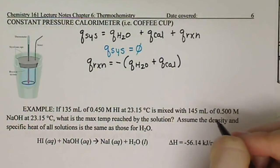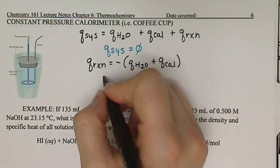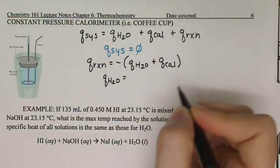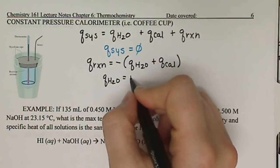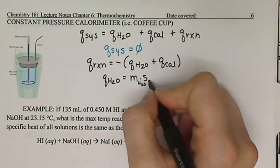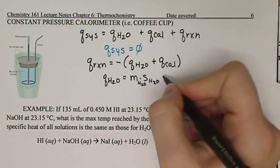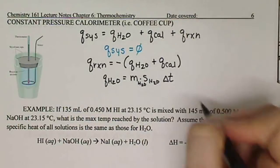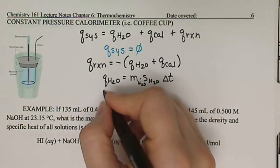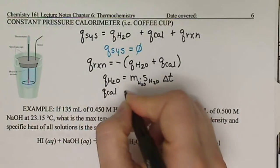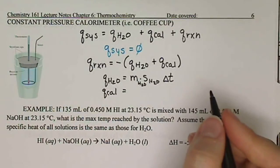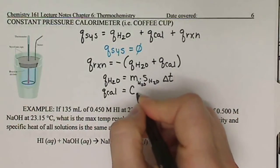Q of the water is going to be based on the specific heat of water: mass of the water times the specific heat of the water times the change in temperature. Then Q of our calorimeter is going to be the heat capacity of all of its components — the heat capacity of the calorimeter times delta T.